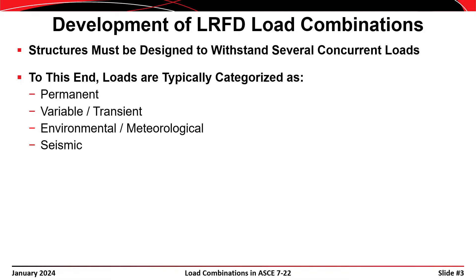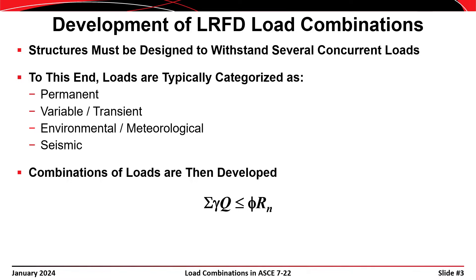That's where load combinations come into play. The first step is to categorize our loads as permanent loads; loads that are either variable or transient; loads that are environmental or meteorological; and loads that are from a geologic source, like earthquake loads. For load and resistance factor design, the governing equation is the sum of gamma times Q has to be less than or equal to phi times R sub n. Right now we're going to focus on the development of the left-hand side of this equation — the sum of gamma times Q, which are the load combinations that we design for.